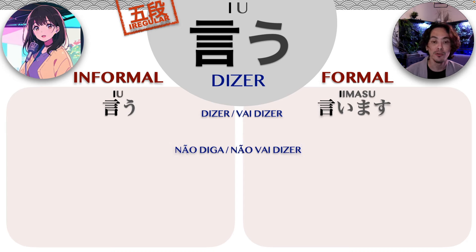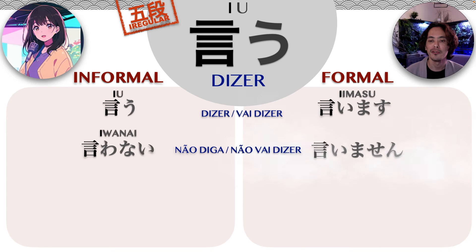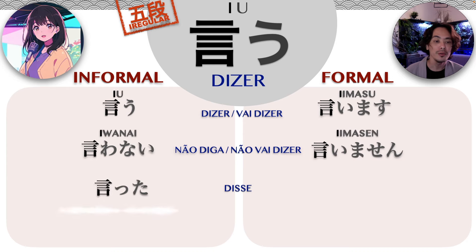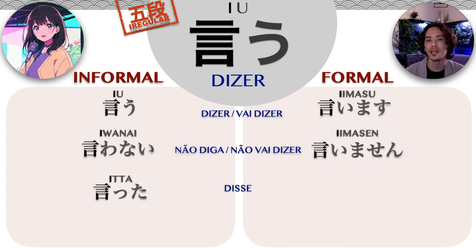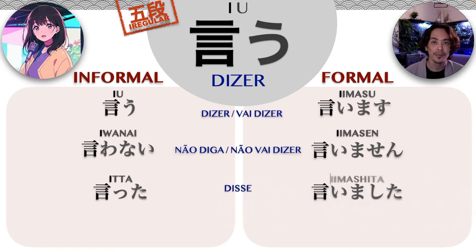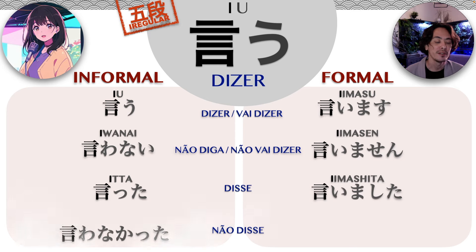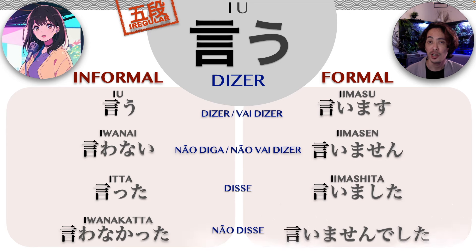Na forma negativa do presente e do futuro, no informal fica sendo iwanai, iwanai. Já na forma formal, iimasen, iimasen. A pronúncia tem um espaço entre o som do i e o ta. Então: itta, itta. E já na forma formal, iimashita, iimashita.